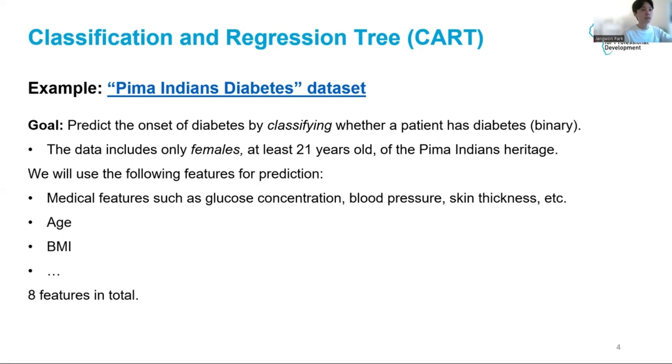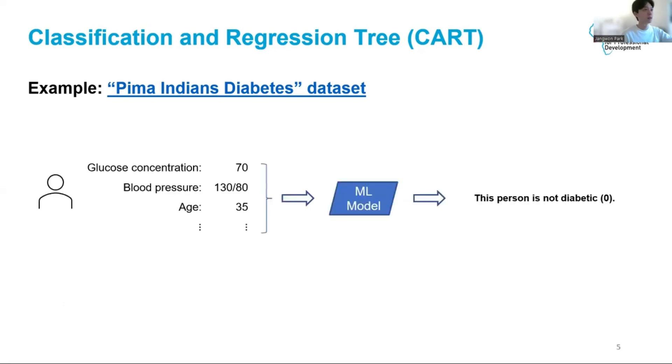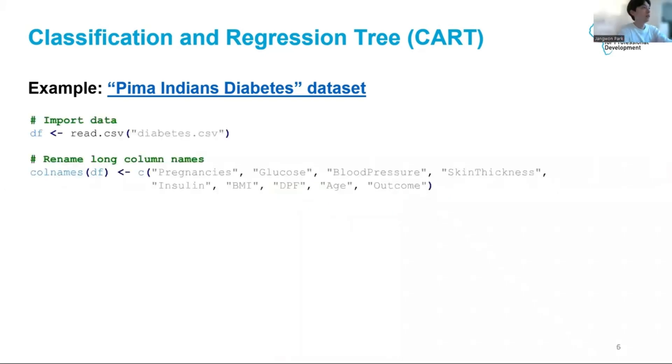This dataset contains the following features that we can use for prediction. First, we have a set of medical features such as glucose concentration, blood pressure, skin thickness, etc. We have the age of the person, body mass index, and so on. We have eight features in total. Let's visualize the classification task a bit more intuitively. Suppose a person has the following values for each of the eight features. We will feed this information to the machine learning model, which then outputs its best guess at whether or not the person has diabetes. Of course, the machine learning model in this lesson we will consider a CART model.